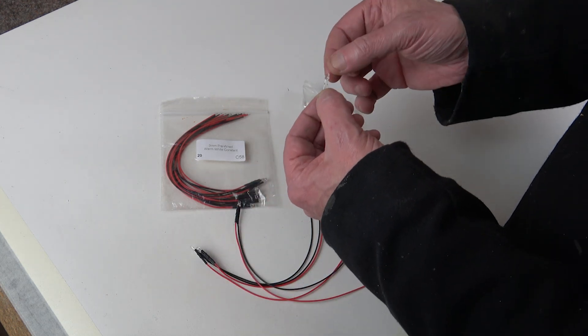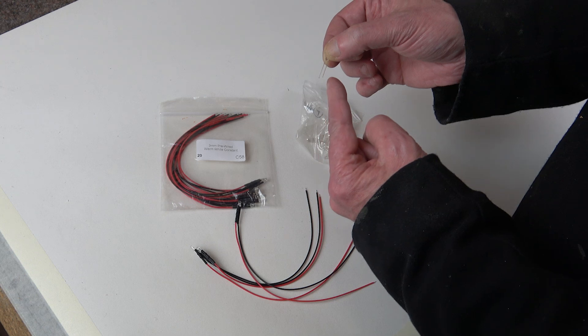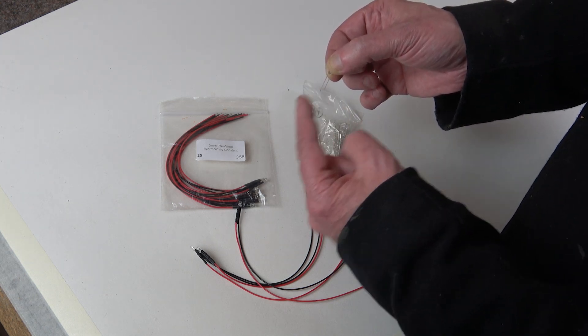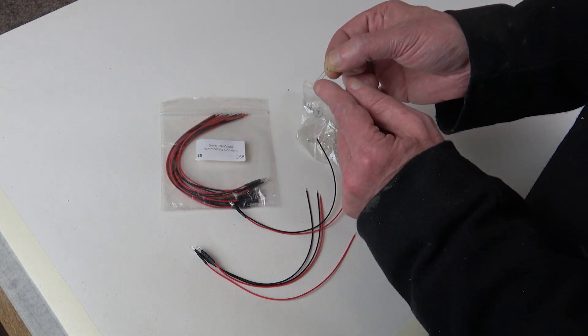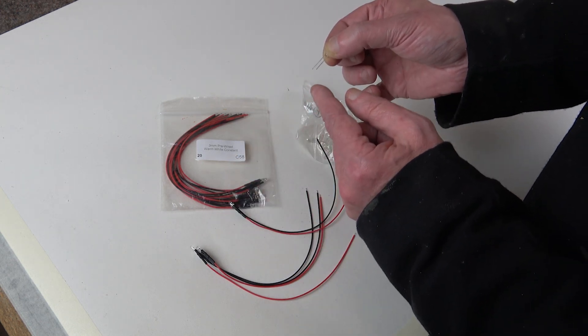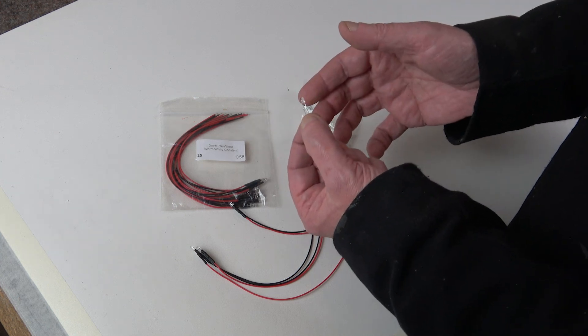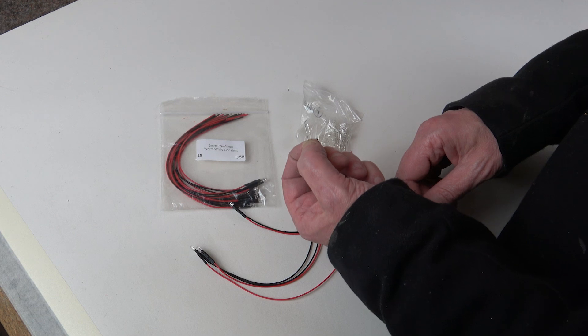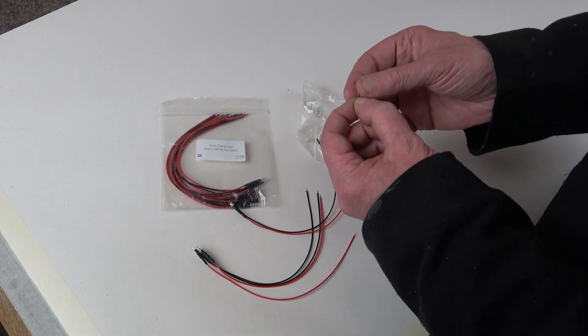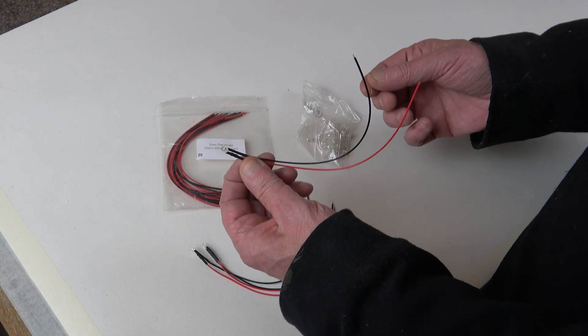They have a long leg and a short leg. The long leg is the positive, in this case the red. The short leg is the negative or black. That's all you really need to know about these LEDs - they're cheap, they're fairly durable, you can abuse them a bit, and sometimes they come pre-wired which is handy.